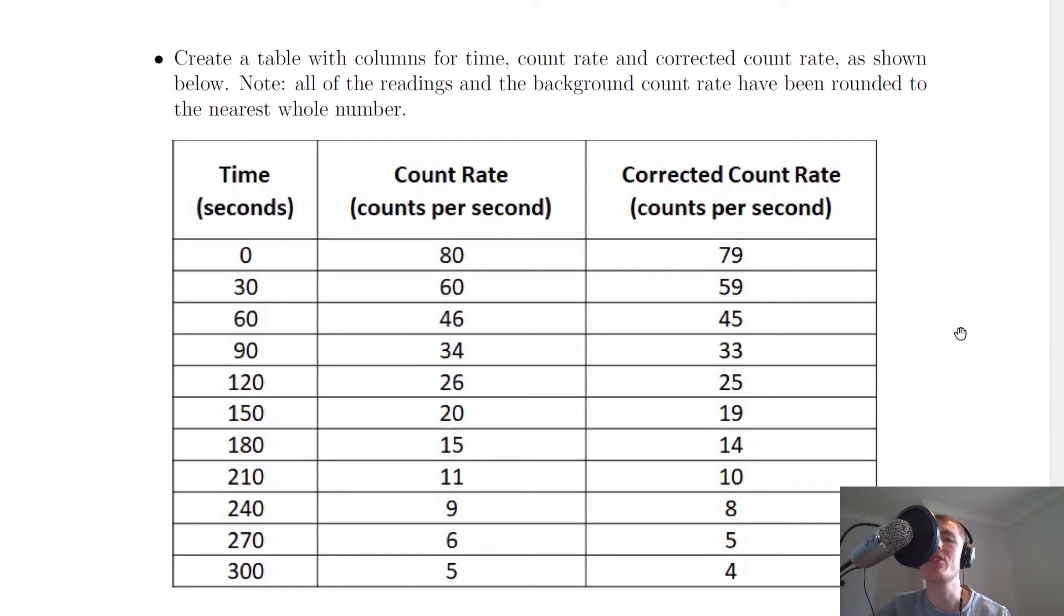A table that you might want to sketch when you're doing the experiment would look something like this. So it says to create a table with columns for time, count rate and corrected count rate as shown below. Know that all of the readings and the background count rate have been rounded to the nearest whole number. So there's our time measured in seconds, going up in 30 second intervals up to 300 seconds because that's our five minutes.